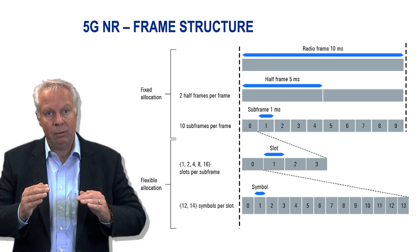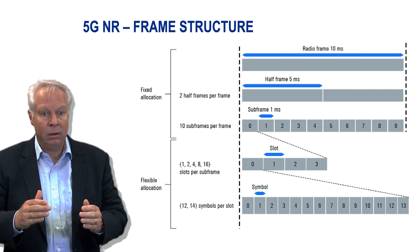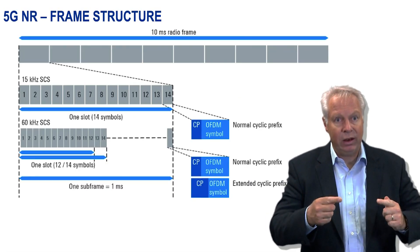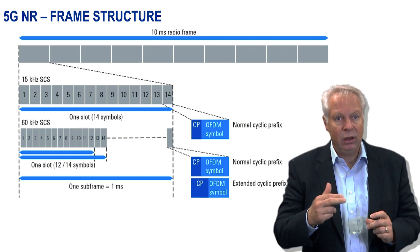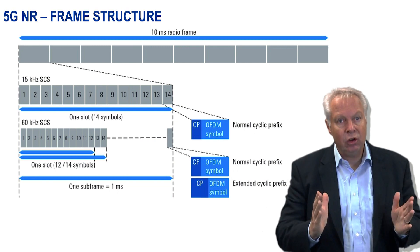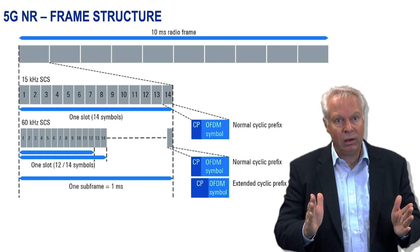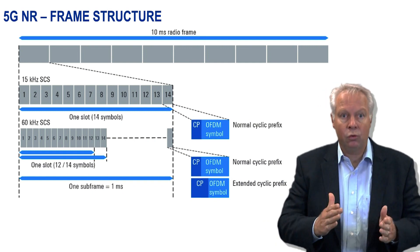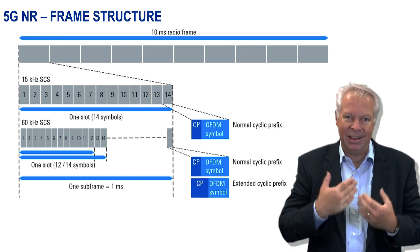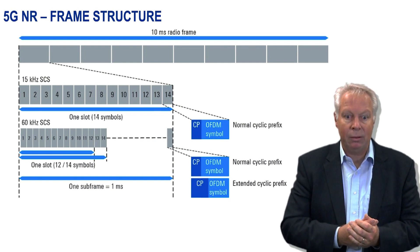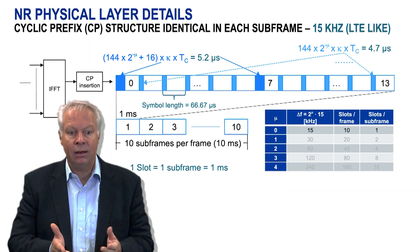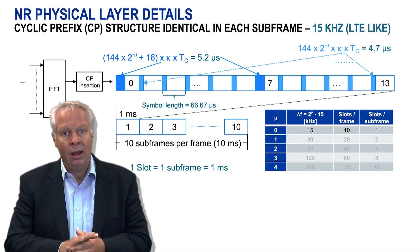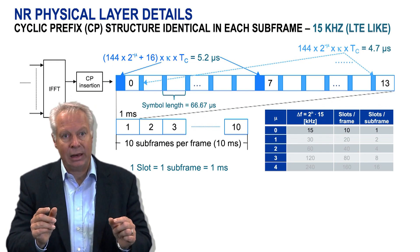When I said 14 OFDMA symbols per slot, this is the default mechanism. There is one special extra case valid only for the 60 kHz subcarrier spacing. To allow a larger cell size, 3GPP also introduced an extended cyclic prefix, which leads to only 12 OFDMA symbols in time. So it's either 14 or 12, but the default is 14 OFDMA symbols per slot.